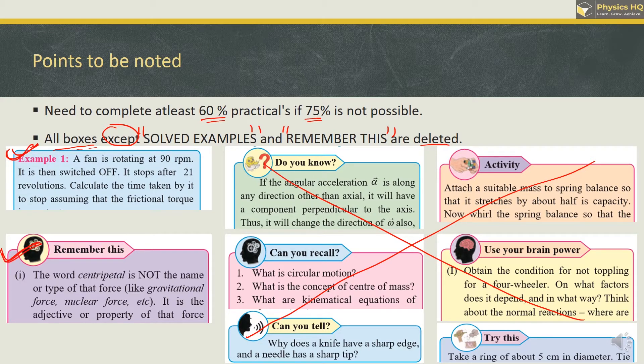Because after a particular concept, when you read the 'remember this' section, it will cover a particular topic and you can verify that your understanding is correct or not. So these two things — solved examples and remember this — are very important. Your theory will be confirmed. Now let us go ahead and talk chapter-wise.